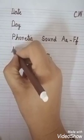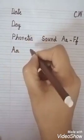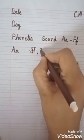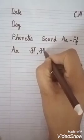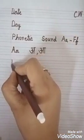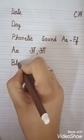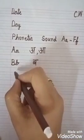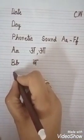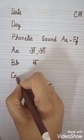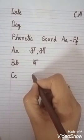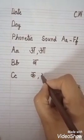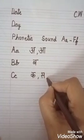Write down capital A, then small a. B — capital, then small. B sound: B. Then what comes next? C — capital, then small. Very good. Then write down K in the letter, then comma, then Ch.